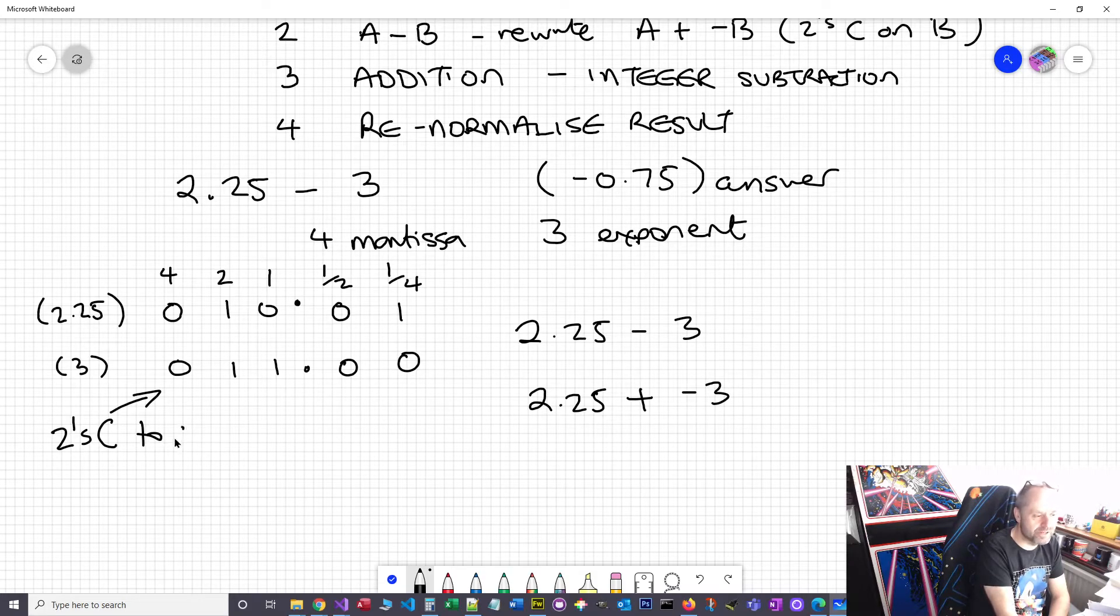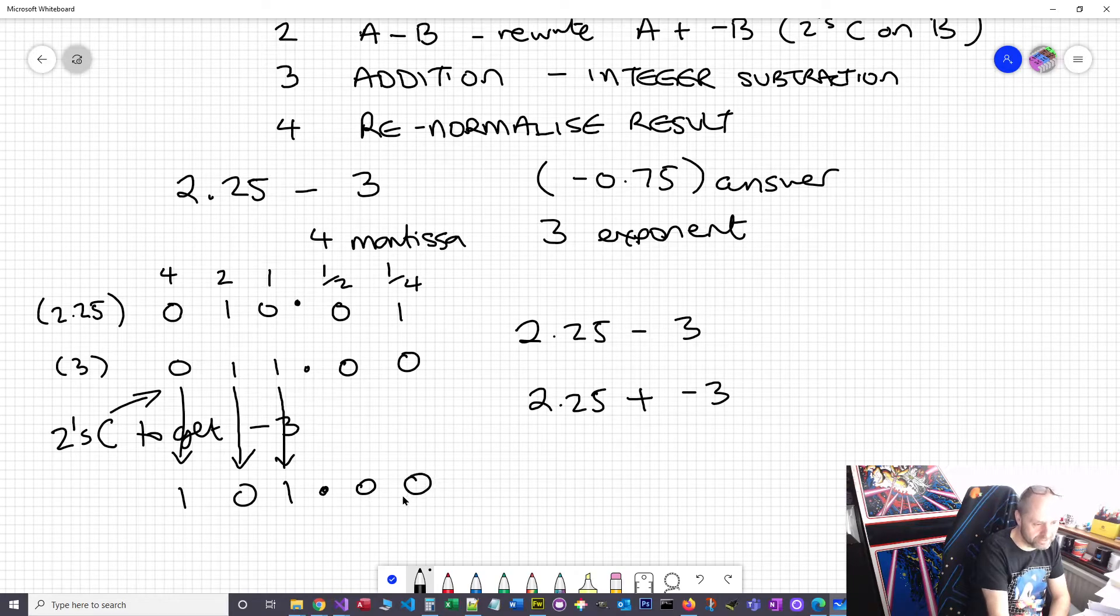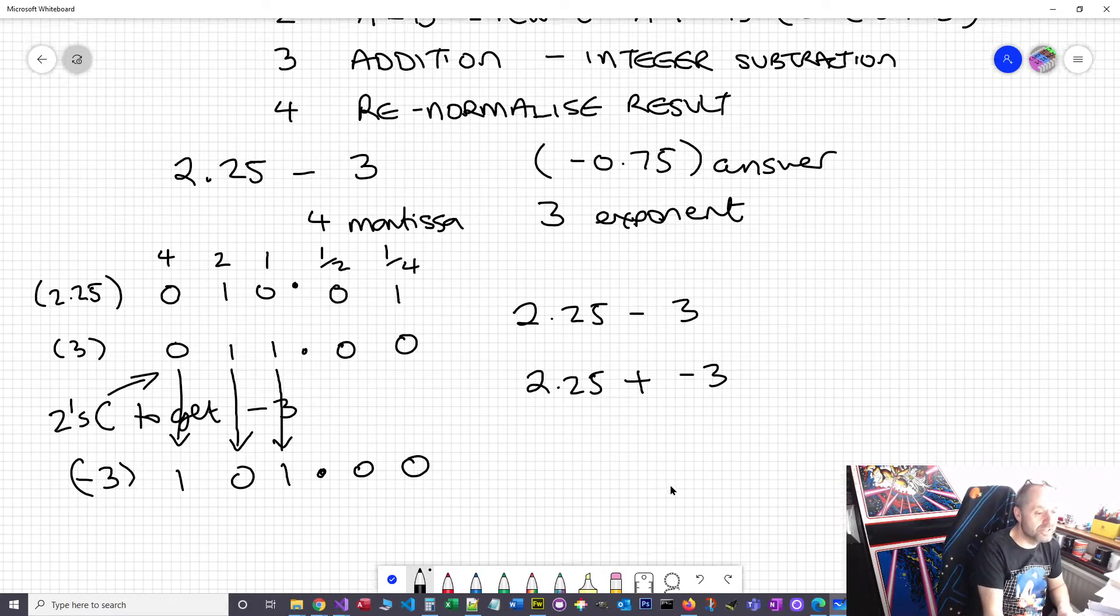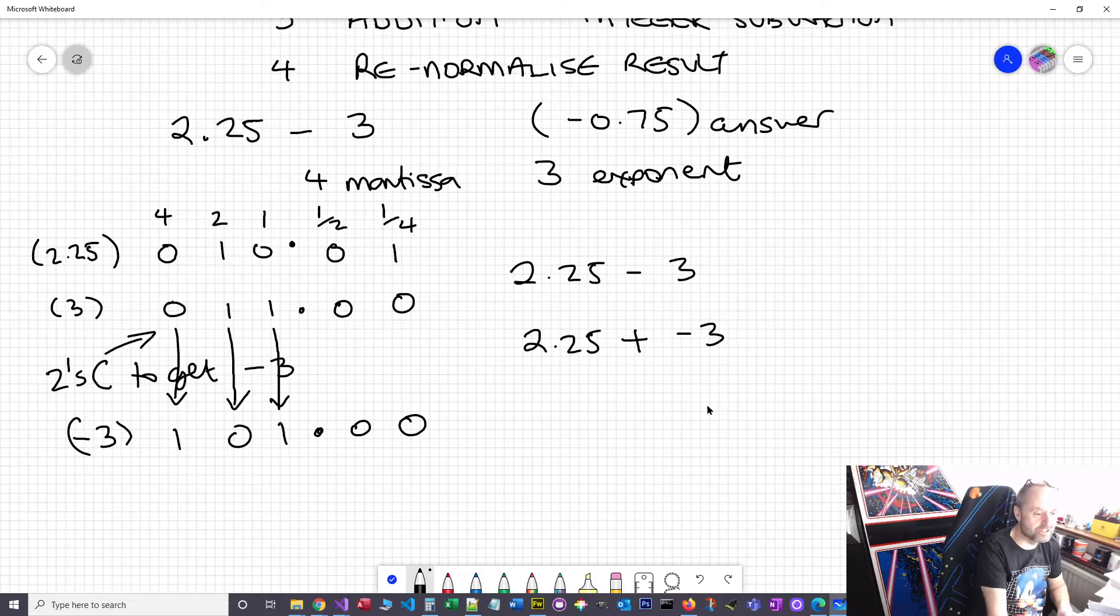Same old, same old - flip all the bits until we get to the last one, leave it as a one, and write the remainder down. I'm going to flip, flip - that's my last one so I'm going to leave it as a one, and then everything else stays the same. So that is now minus three.